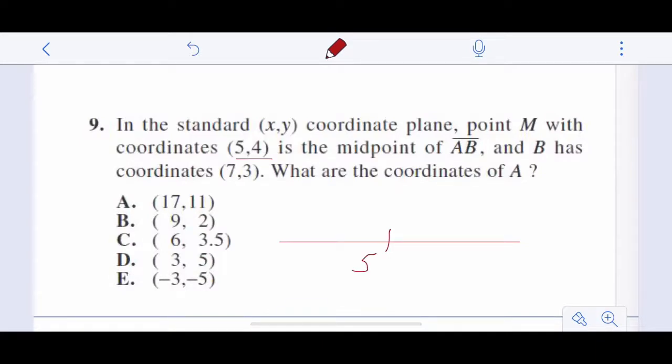So 5, 4, so x, y coordinate. And B has a coordinate of 7, 3. So this is point A, this is point B. And we want to know what are the coordinates of A. So we need this point. So our midpoint formula is x1 plus x2 divided by 2 equals the midpoint of x.